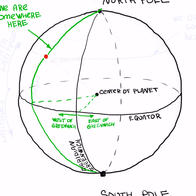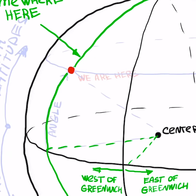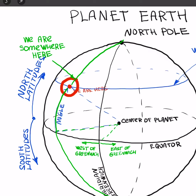If your geographical longitude is 20 degrees westward, it means you are somewhere on the green line, and the cross-point of these two lines is actually your geographical position.